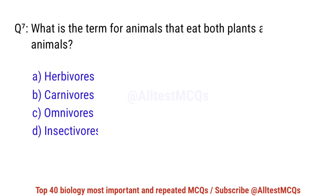Question number 7. What is the term for animals that eat both plants and animals? The right option is C: Omnivores.